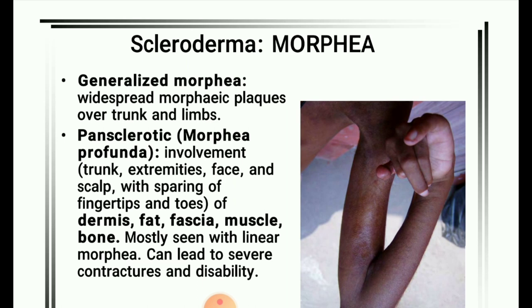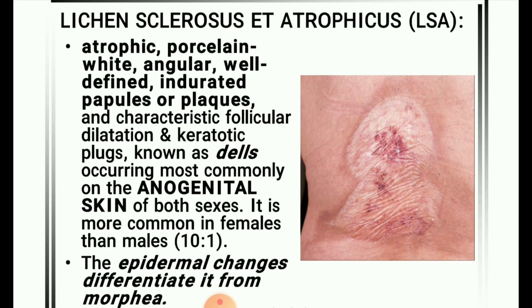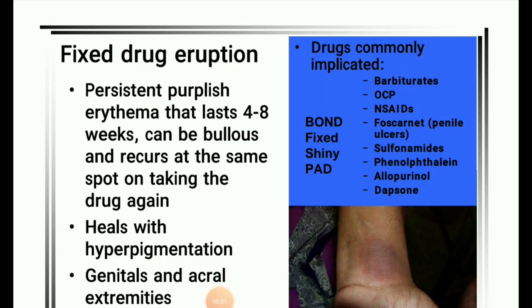Next image: Lichen sclerosus et atrophicus — atrophic porcelain-white angular well-defined indurated papules or plaques with characteristic follicular dilatation and keratotic plugs (dells), occurring most commonly on anogenital skin of both sexes, more common in females. The epidermal changes differentiate it from morphea.